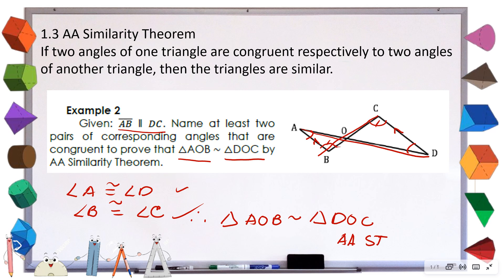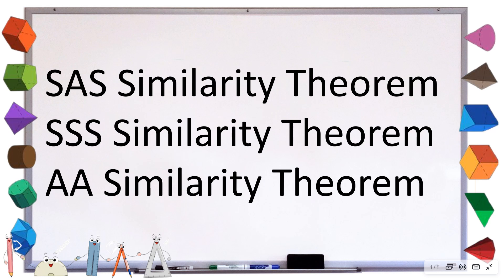We have two angles that are proven congruent. Let's review the three similarity theorems. For SAS, we just need two sides proportional and the angle between them congruent. For SSS, we prove all three sides are proportional — if there are only two sides proportional, we need to prove the angle between them congruent, but with three proportional sides the triangles are already similar. For AA, if two angles are congruent, the two triangles are already similar.